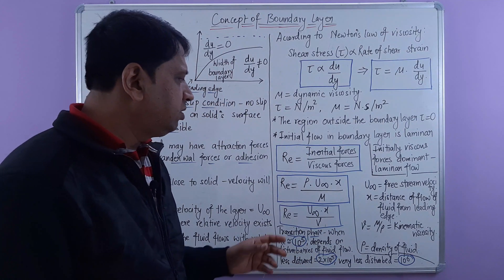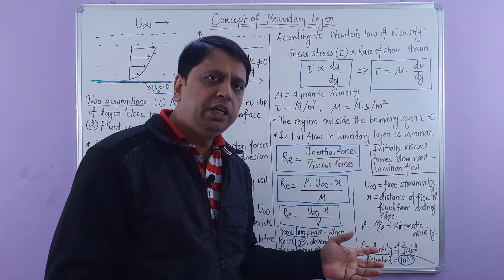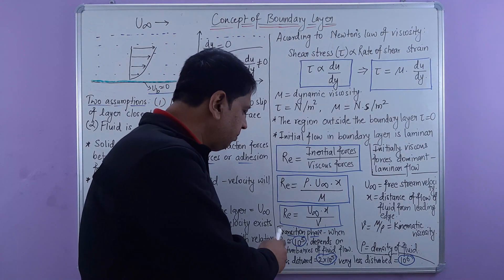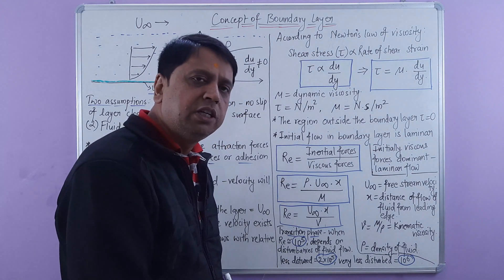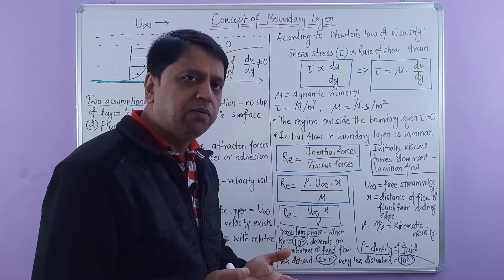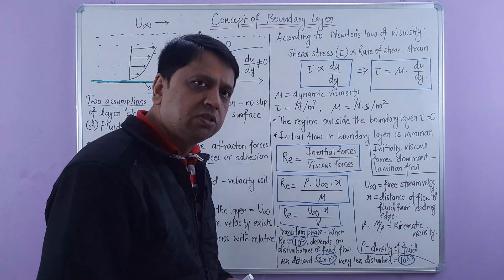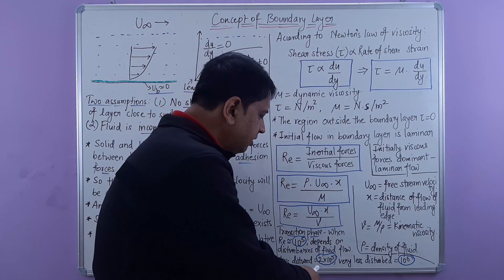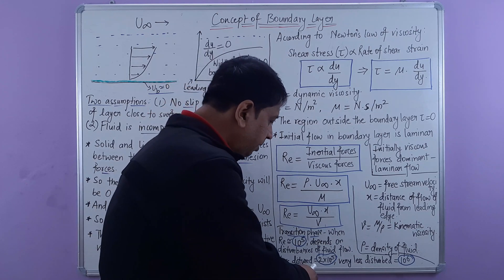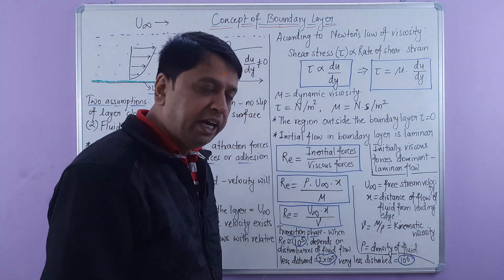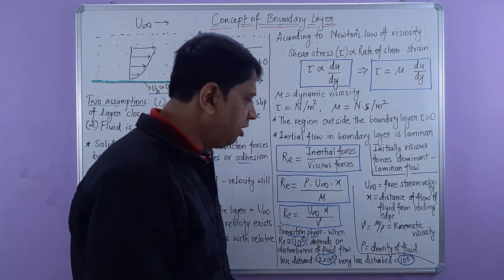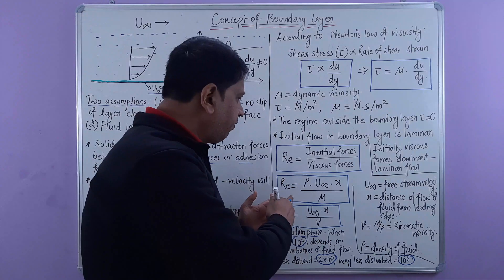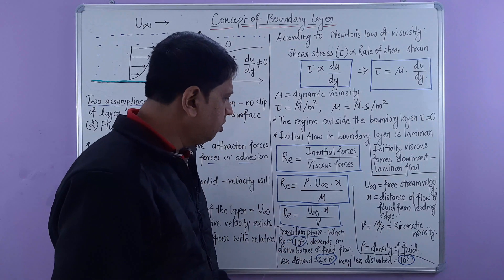A transition phase exists between laminar and turbulent flow. This transition depends upon the disturbances of the fluid flow. On average, the transition phase starts when the Reynolds number is approximately 10⁵. However, if the flow is less disturbed, it may start at 2 × 10⁵, and for very undisturbed liquid the transition may begin at a Reynolds number value of 10⁶.